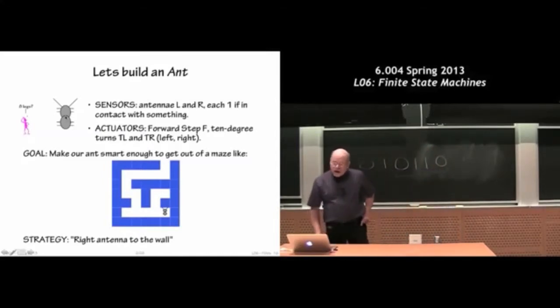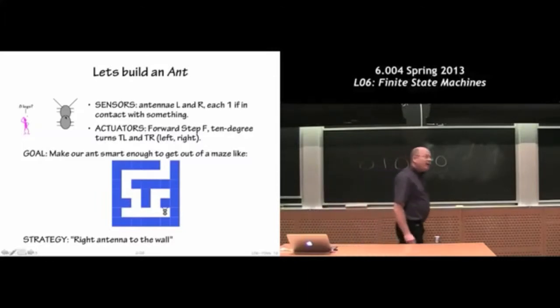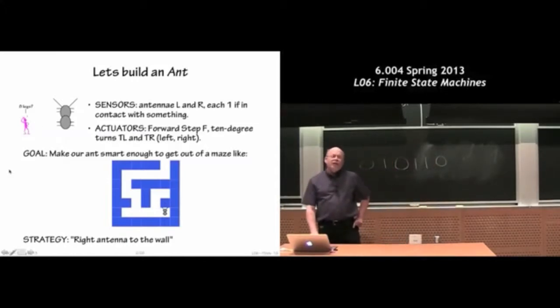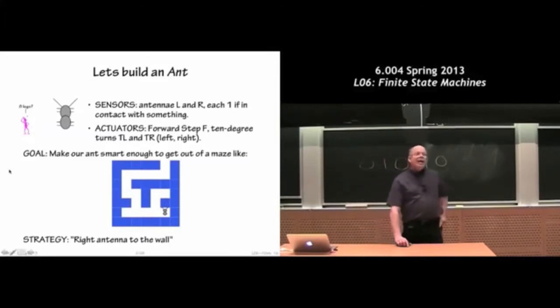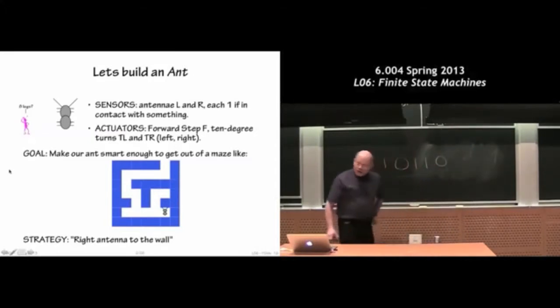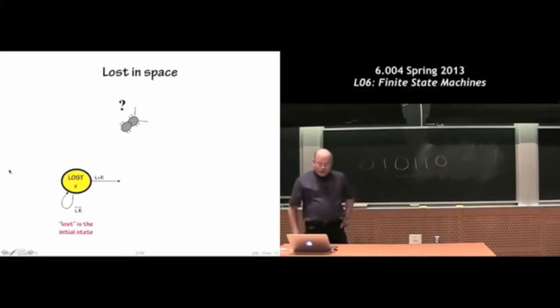So here's a little maze. Our ants, for reasons that are lost in the mists of time, have eight legs. For those of you who don't strike you as funny, you should go look at an ant carefully. So the strategy of getting out of a maze, at least simple mazes, is put your right hand on the wall and just follow along and eventually you'll come out of the maze. We're going to build a little finite state machine for an ant with its right antenna to the wall.